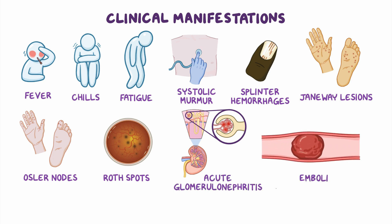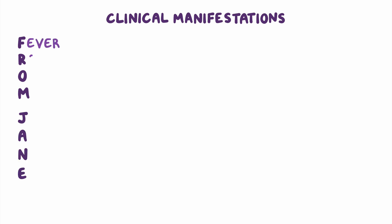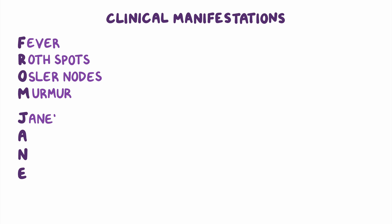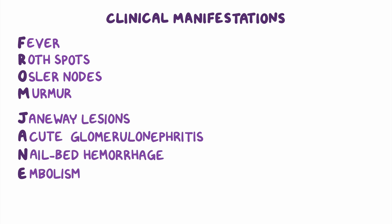Emboli from endocarditis can also cause more serious complications, including intestinal ischemia, pulmonary embolism, and stroke. These clinical manifestations can be remembered with the mnemonic FROMJANE, which stands for fever, Roth spots, Osler nodes, murmur, Janeway lesions, acute glomerulonephritis, nail bed hemorrhage, and embolism.